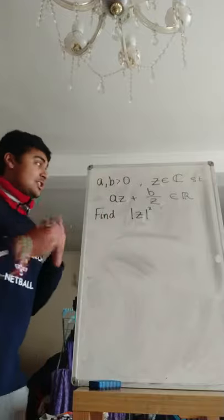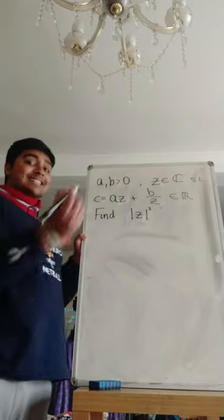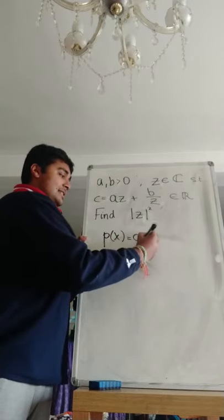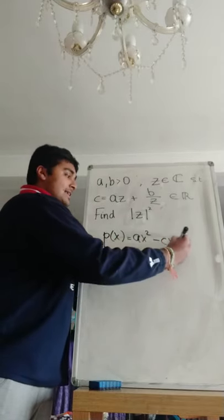Well, because this is some real number, let's just call it c and then consider the quadratic equation p of x, which is just going to be ax squared minus cx plus b.